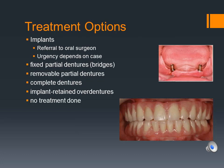Treatment options include implants, fixed partial dentures, removable partial dentures, complete dentures, or implant overdentures. Of course, a patient always has the option to have no treatment done at all. Implants would probably be the best form of treatment.